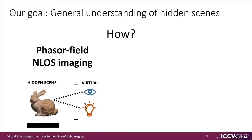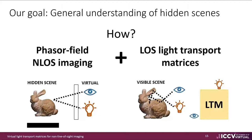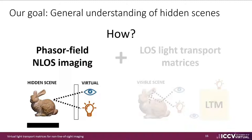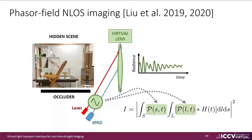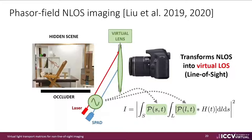Our work combines two key components: recent NLOS methods based on phasor fields, which create virtual lights and cameras facing towards the hidden scene, and traditional computation of the light transport matrix of line-of-sight scenes, which encodes global light transport between light sources and cameras. Phasor field methods have recently opened a new NLOS imaging paradigm that turns the relay wall into a virtual lens observing the hidden scene, by using specific imaging functions that transform real measurements into a field of complex phasors that can be focused at specific planes. This allows us to create virtual imaging devices that observe the hidden scene from a line-of-sight perspective and take pictures of it.